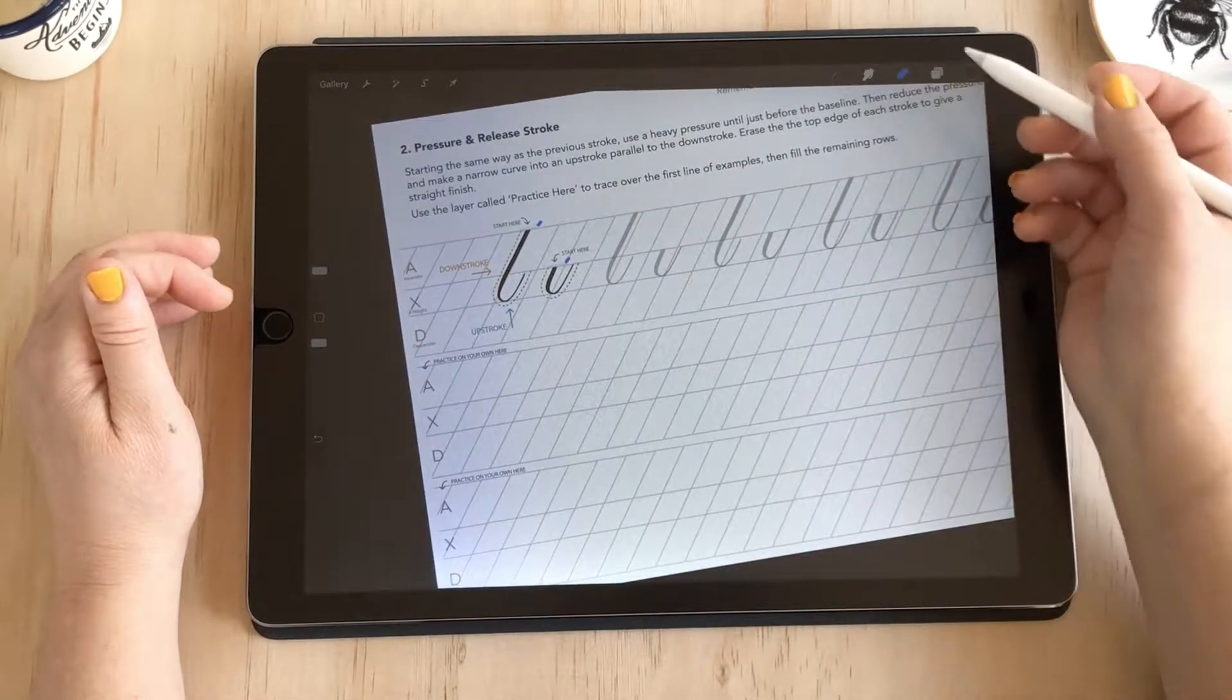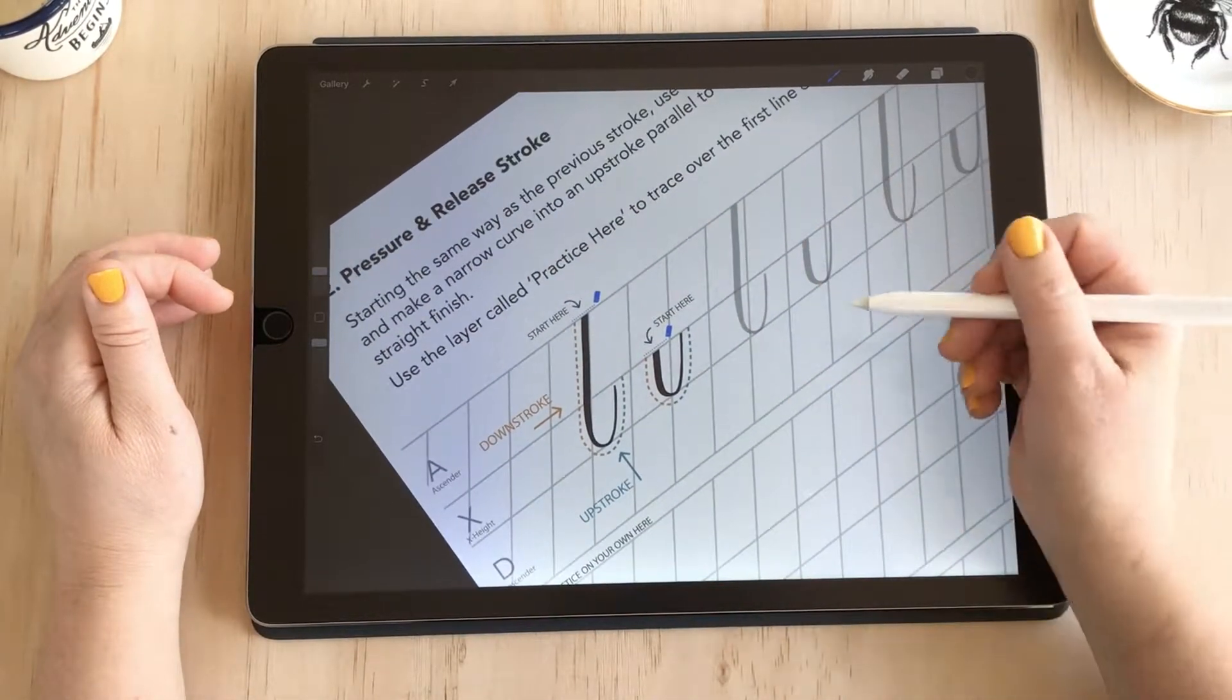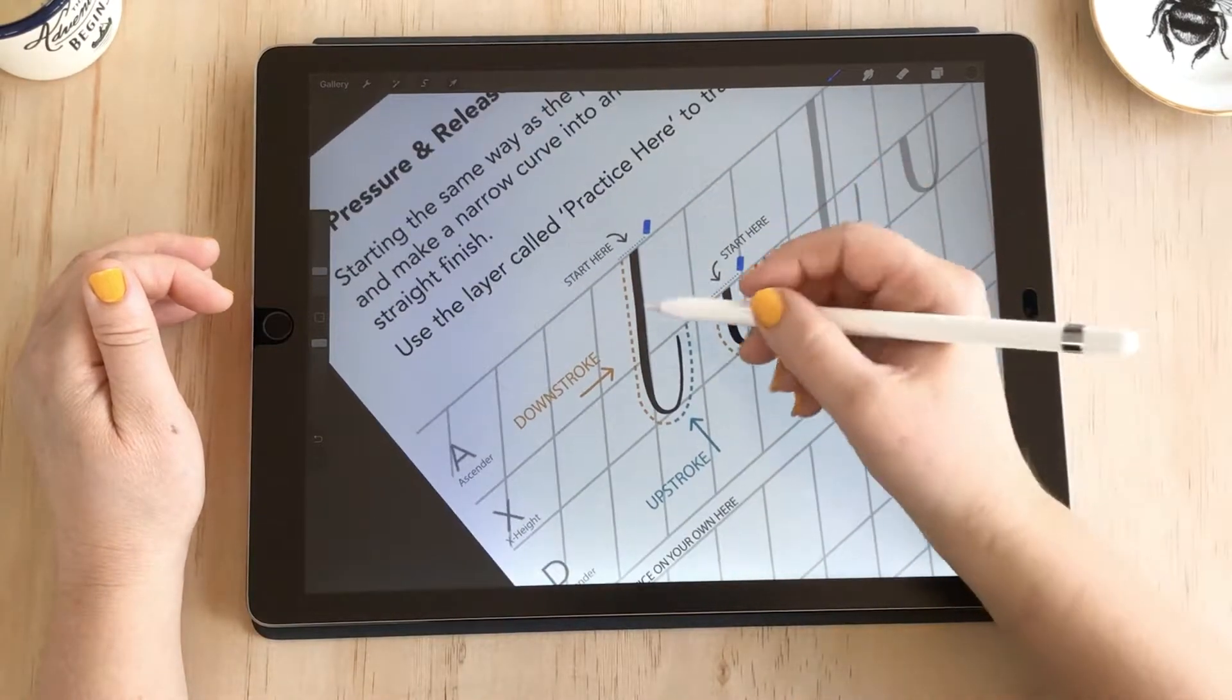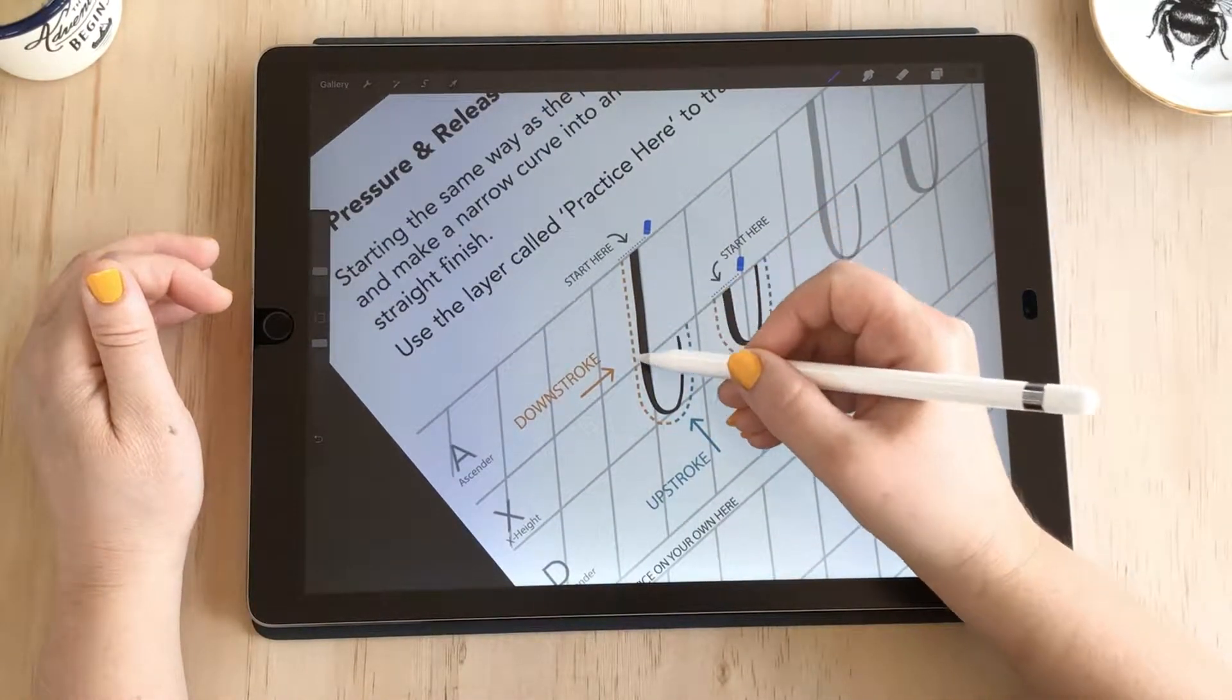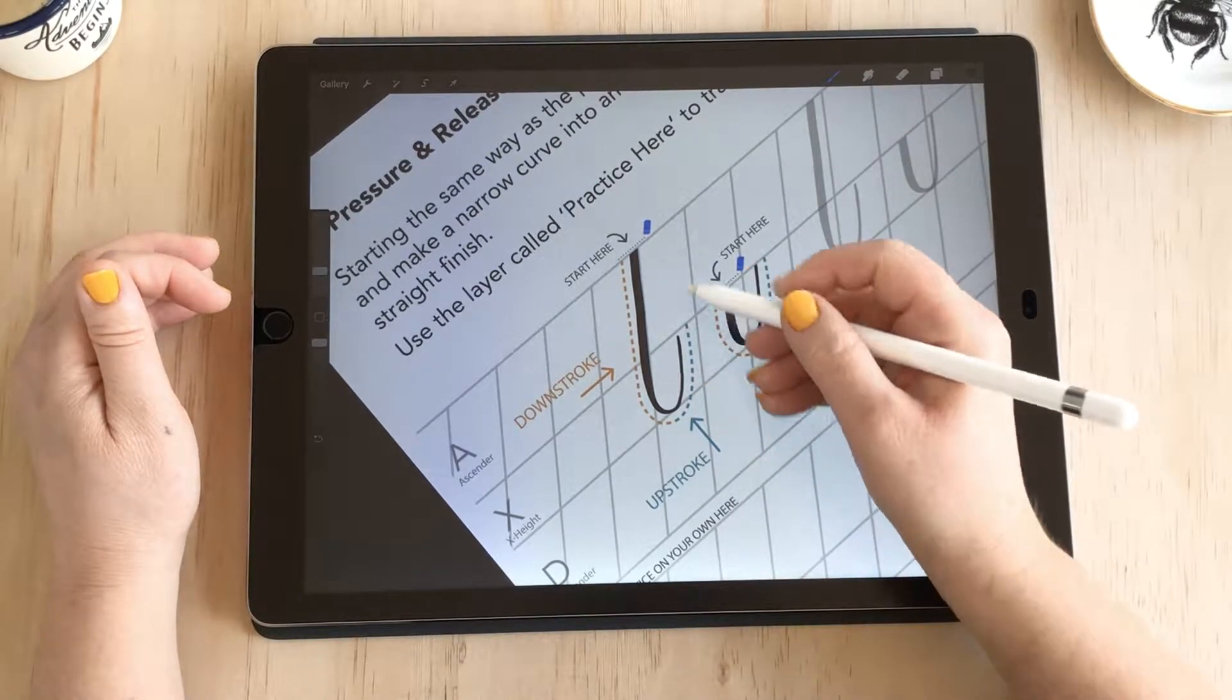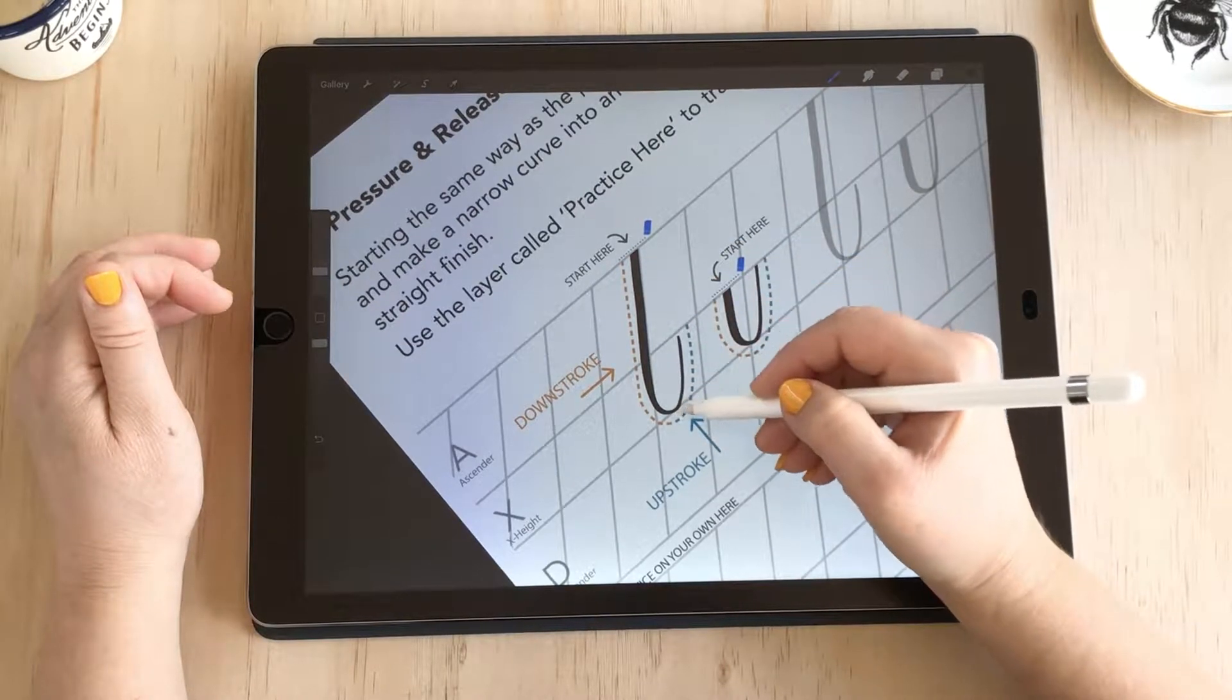Stroke number two is your pressure and release stroke. We have two variations here—a long version and a short. You'll notice we have these dotted lines and colored hints. This tells us that this is a downstroke and then moving into an upstroke. As you can see, the downstroke is thicker and the upstroke is thin.